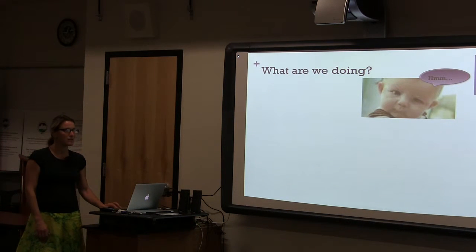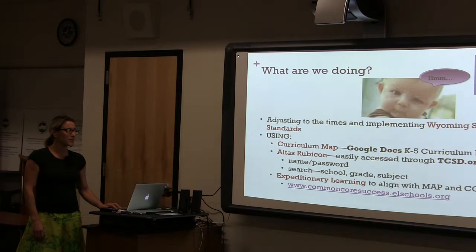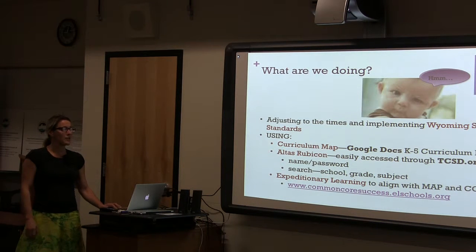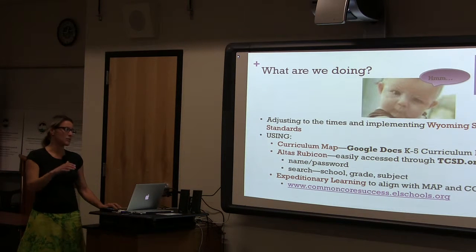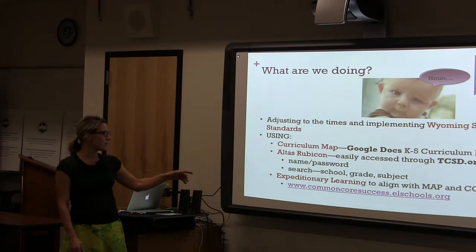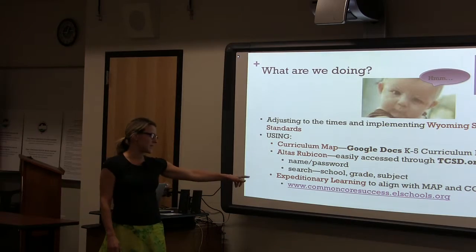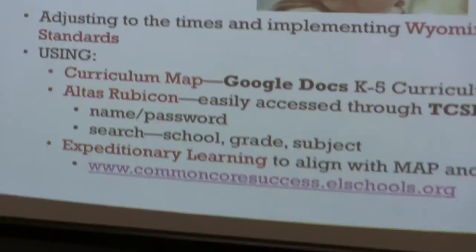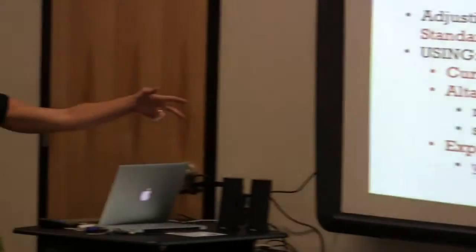We're adjusting to the Wyoming State Standards using the Curriculum Map, which is found on Google Docs and Atlas Rubicon, accessible through TCSD — just type in your name and password. When you want to look at what your grade is doing, type in elementary, the grade level, and the subject. Expeditionary Learning is the resource grades 3–5 are using along with the map and Common Core. You can find it on Engage New York, but I wouldn't encourage that because Engage New York has changed some of what Expeditionary Learning does with their ELA unit.